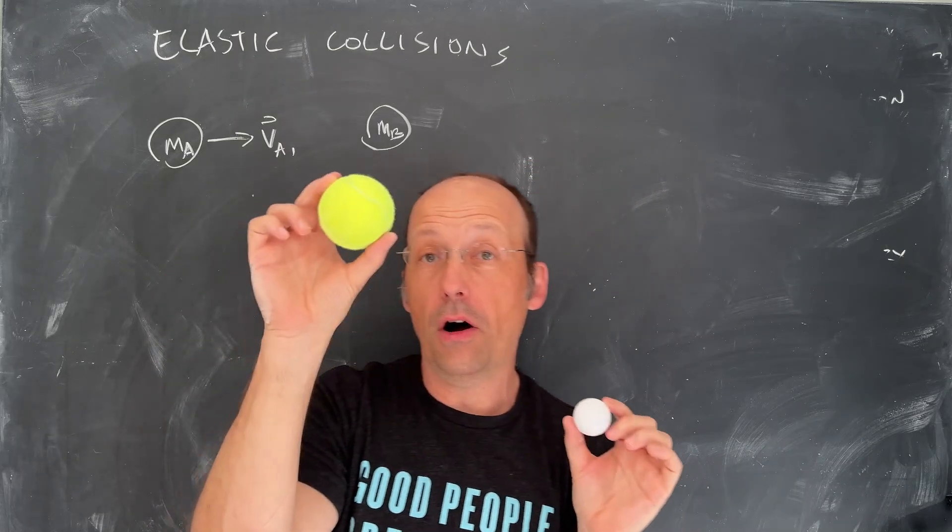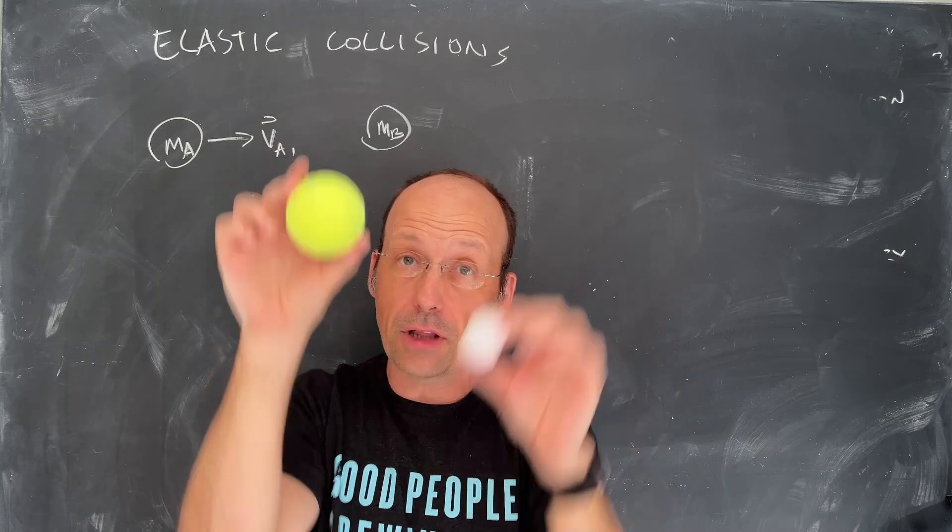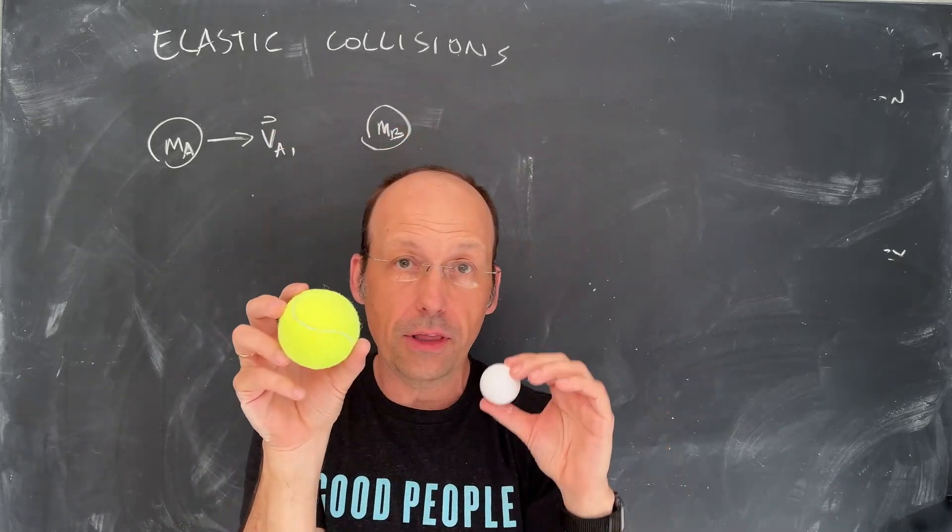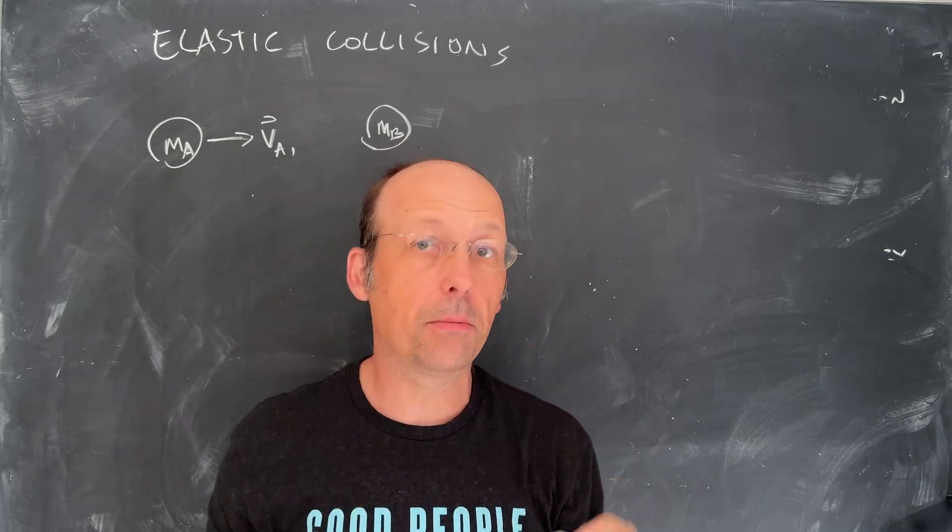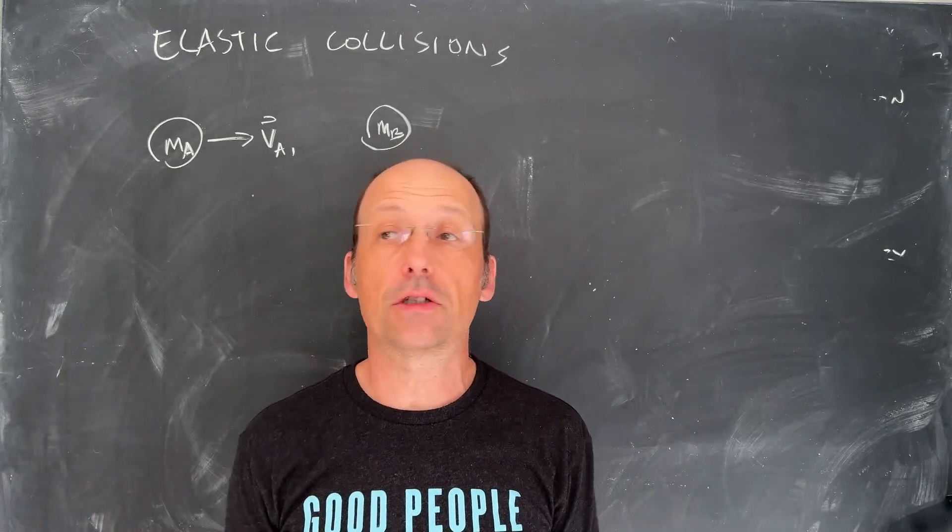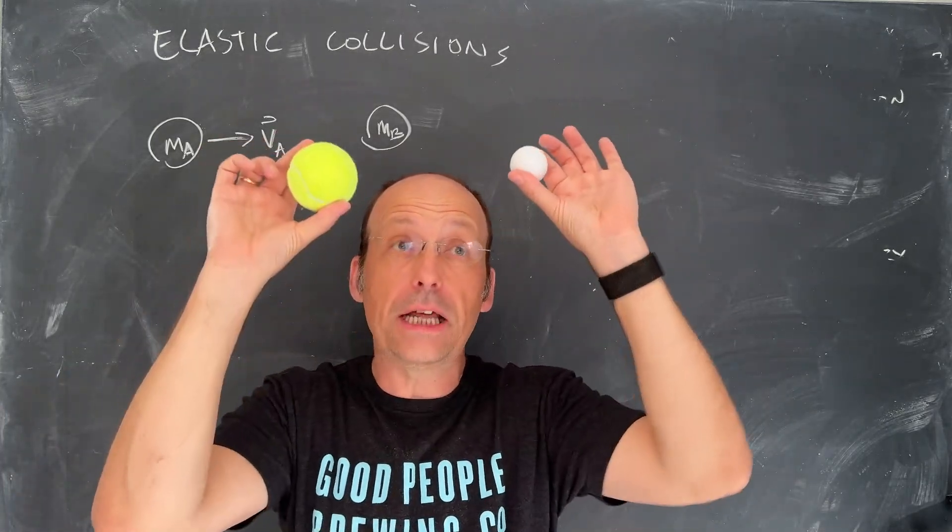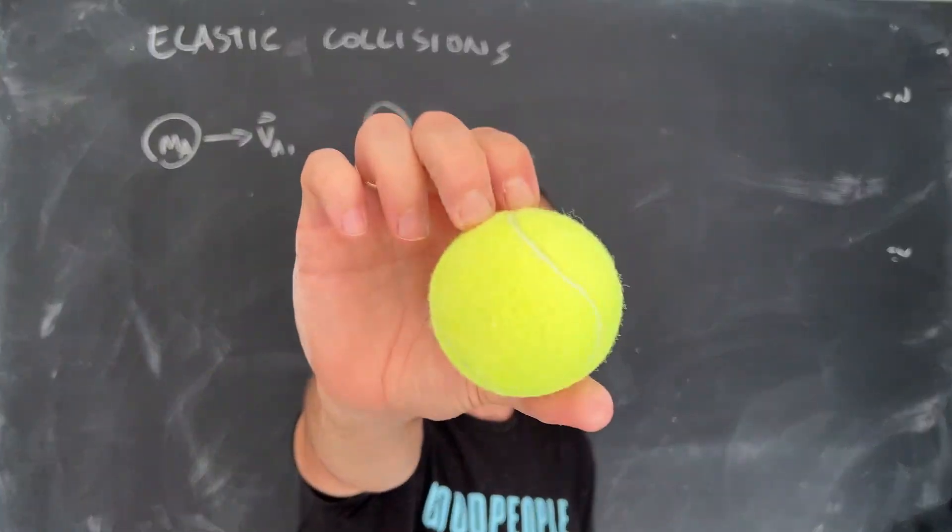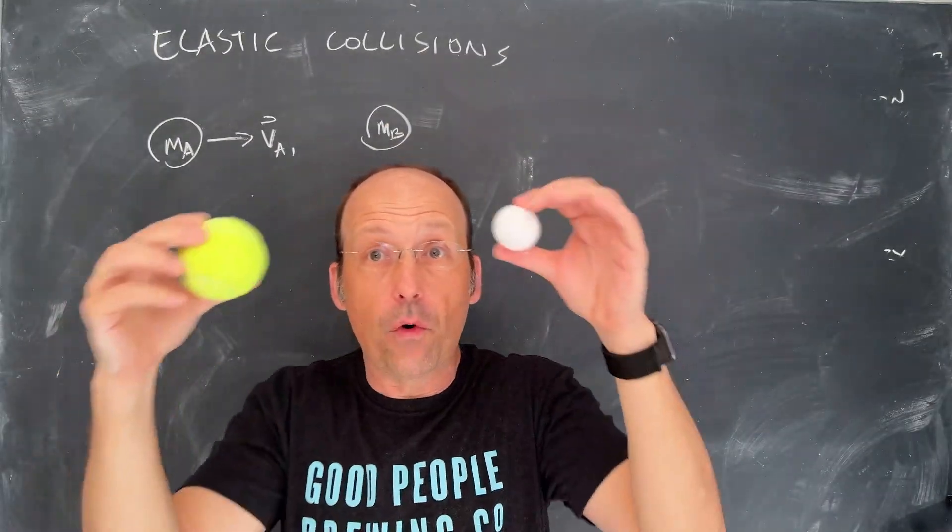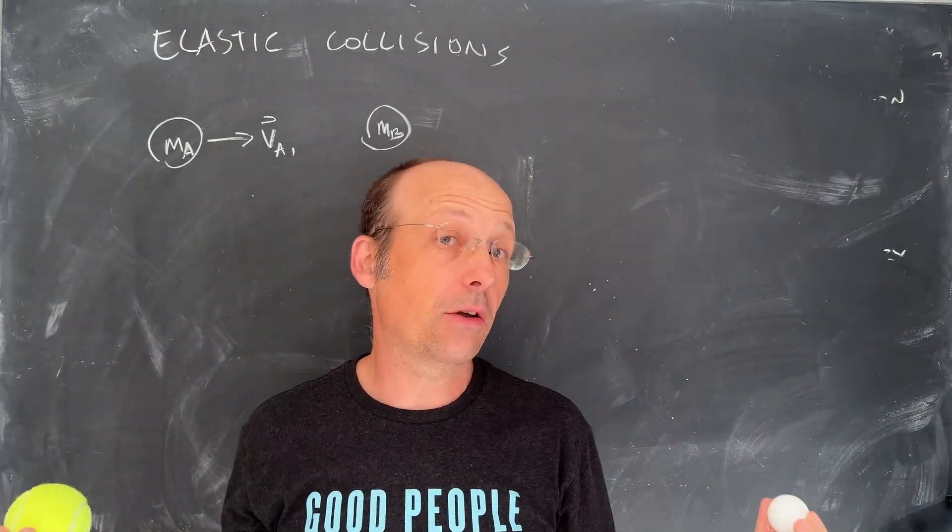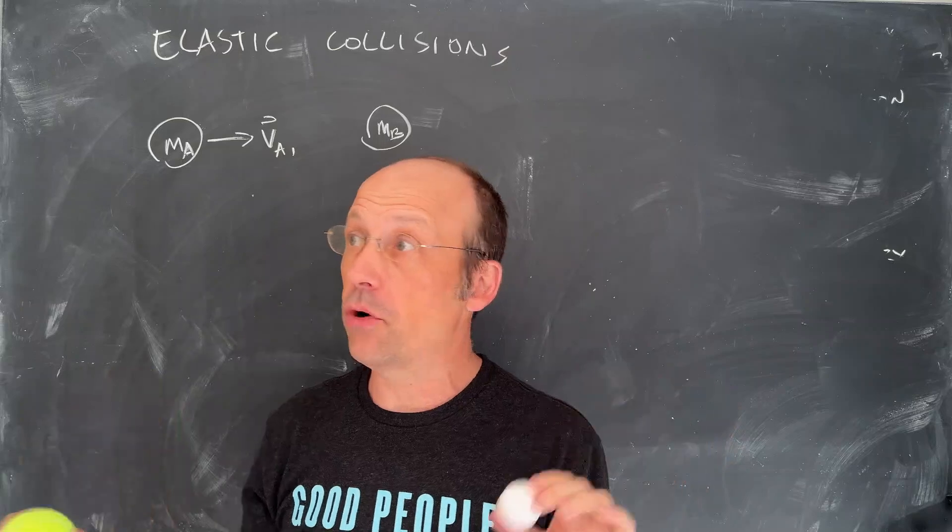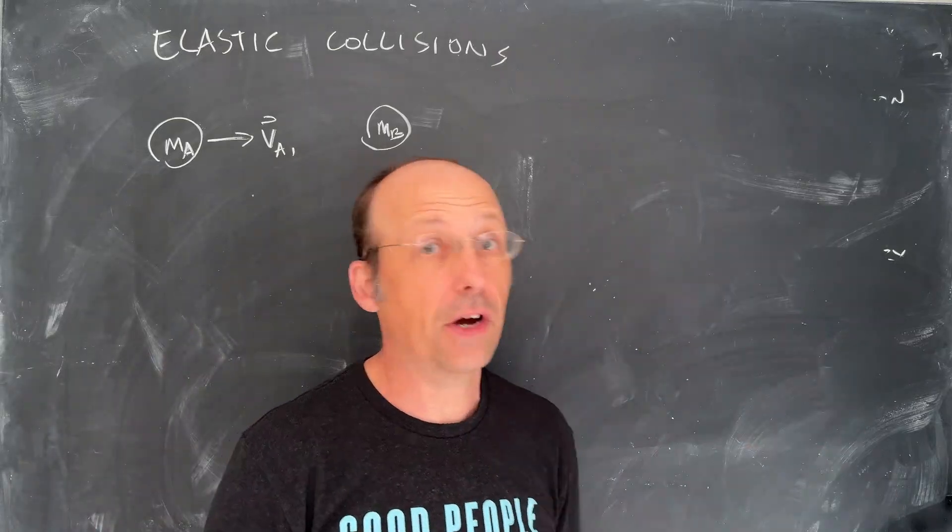If the Earth pulls on the moon, also the moon pulls on the Earth, and so they both have a change in momentum to conserve momentum. So the moon orbits the Earth, and it makes the Earth jiggle a little bit, but that is what we do to conserve momentum. And the key there was that the force on this object was equal and opposite to the force on this object.